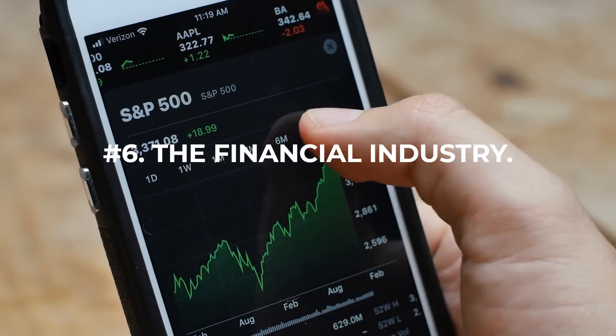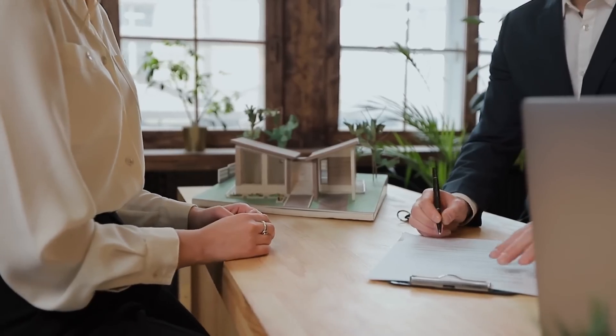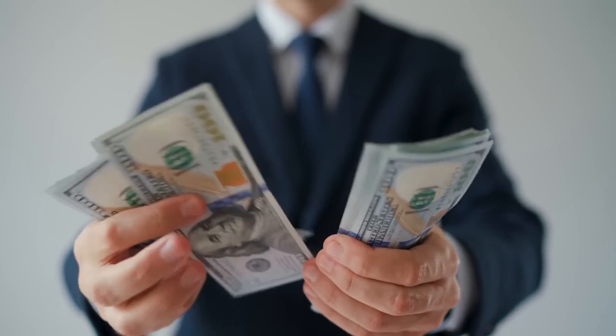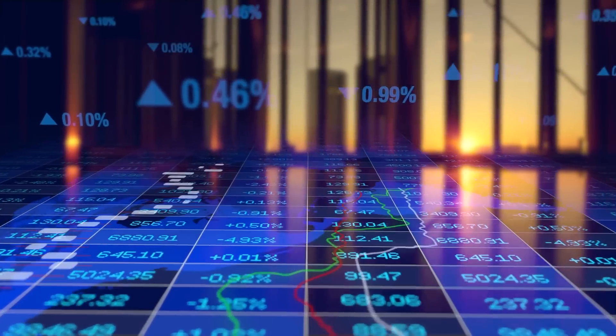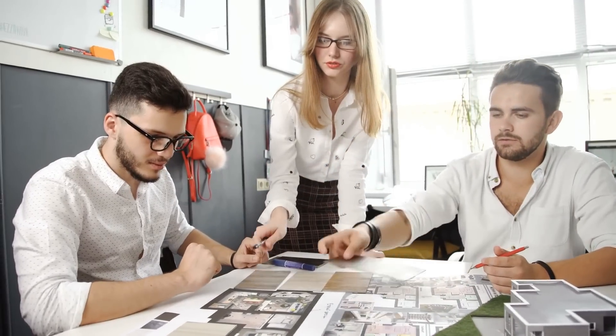Number 6. The Financial Industry. The financial industry, including banks and other institutions, heavily relies on accurate predictions for effective lending practices. Artificial intelligence has proven to be highly effective in this regard, rendering many traditional finance jobs obsolete.